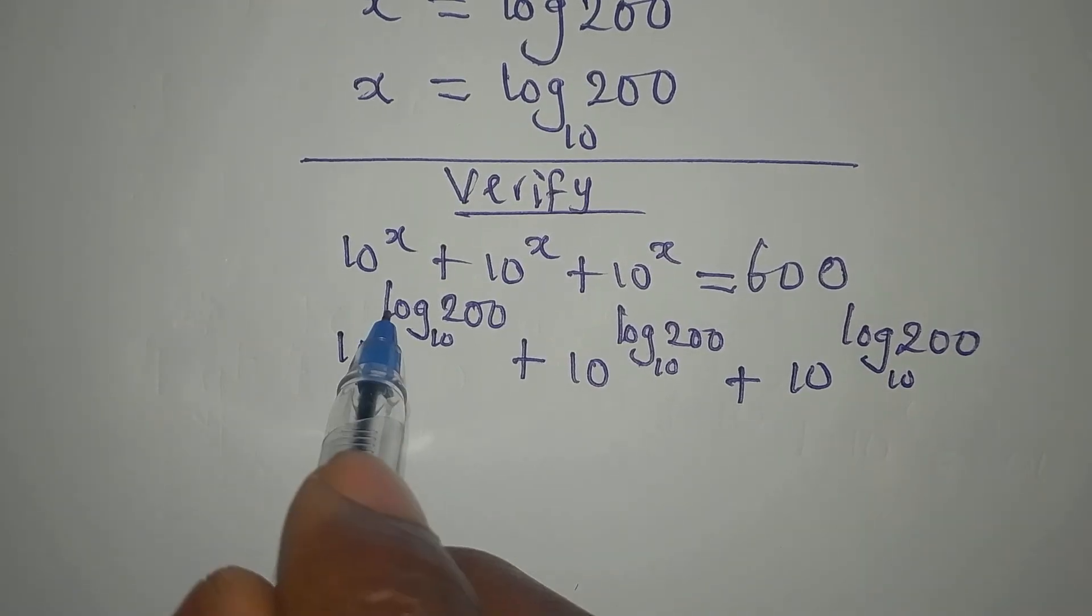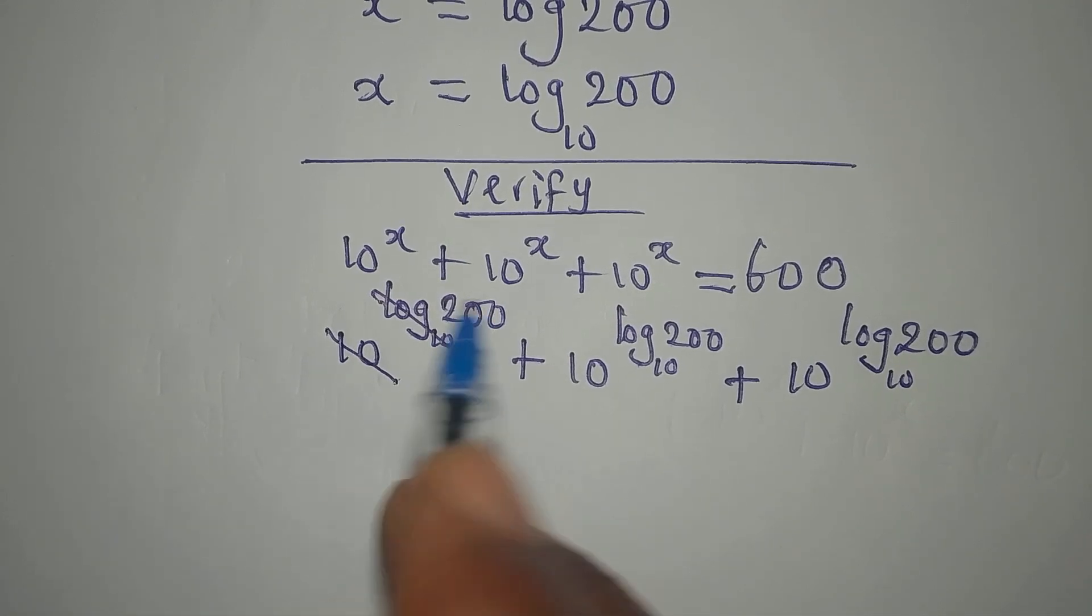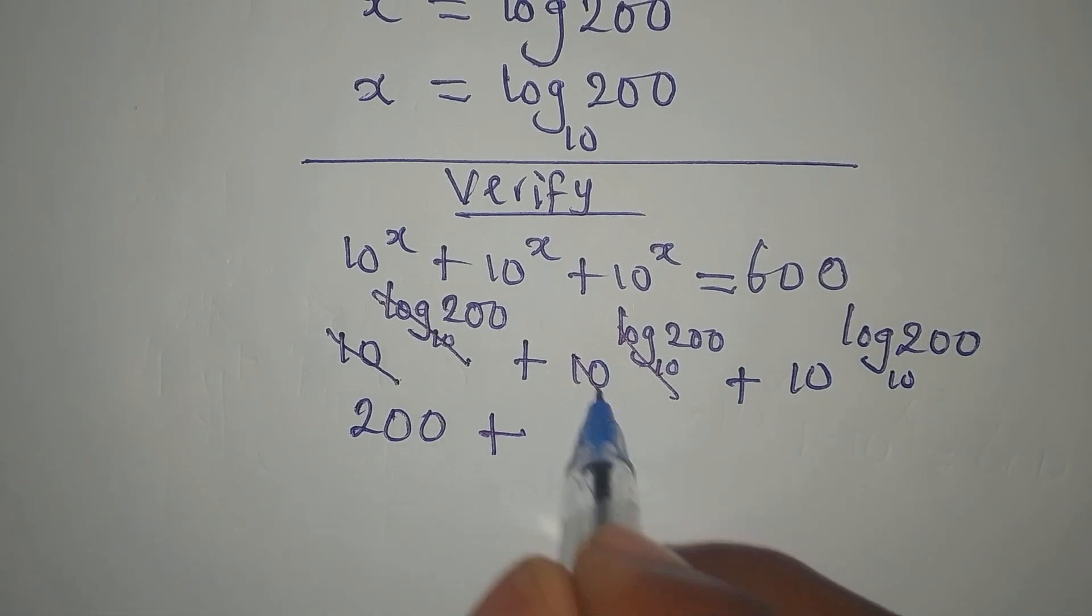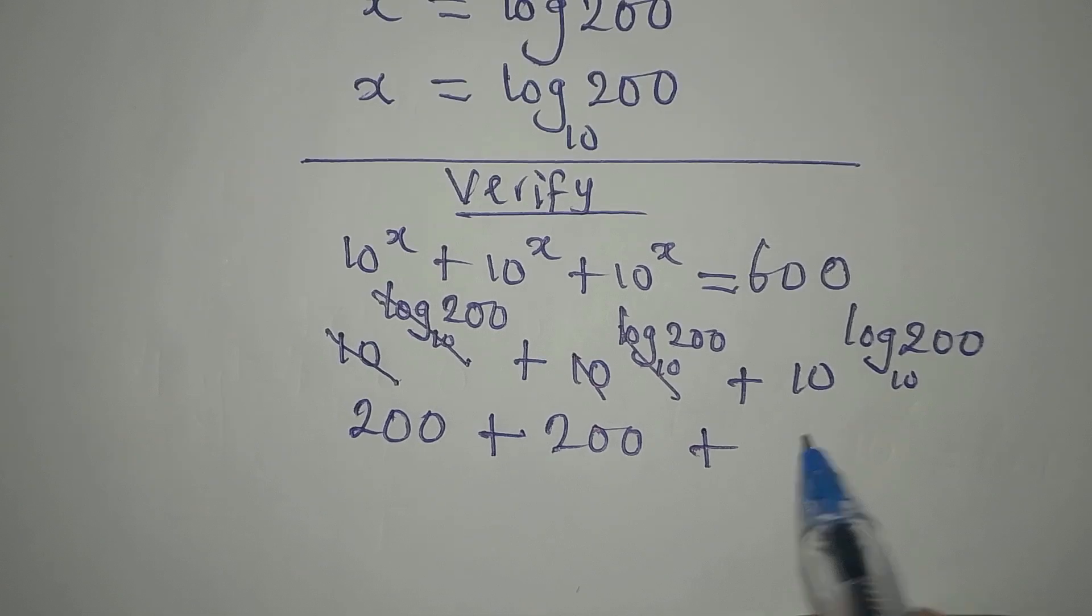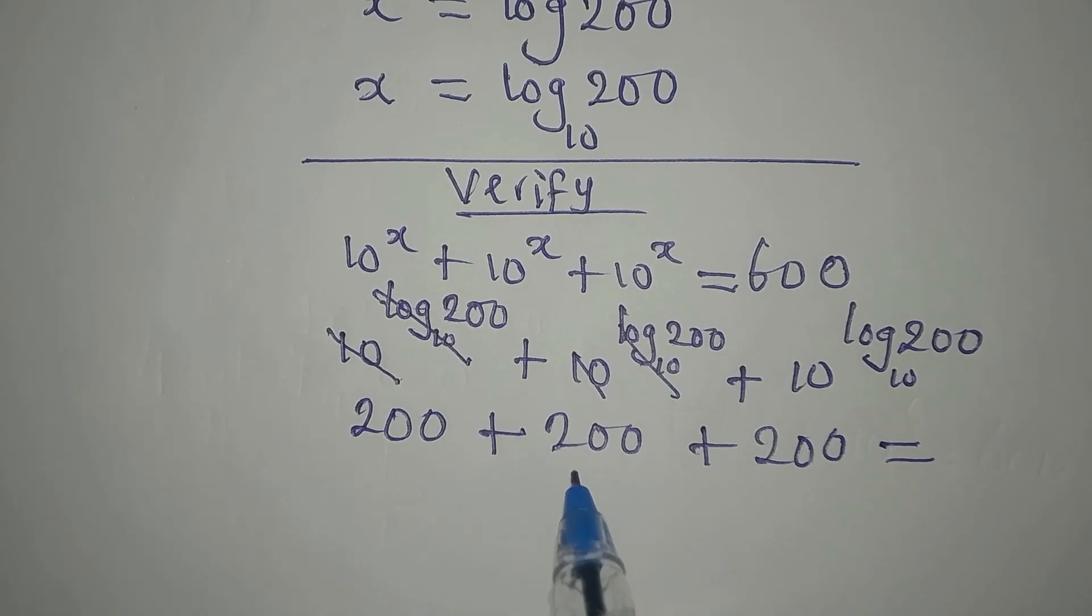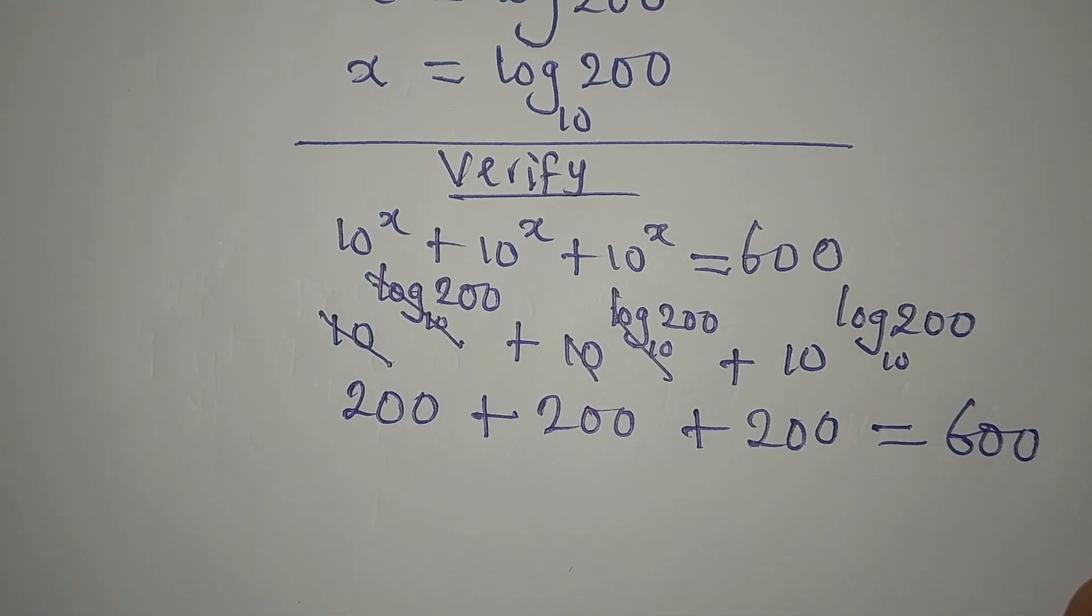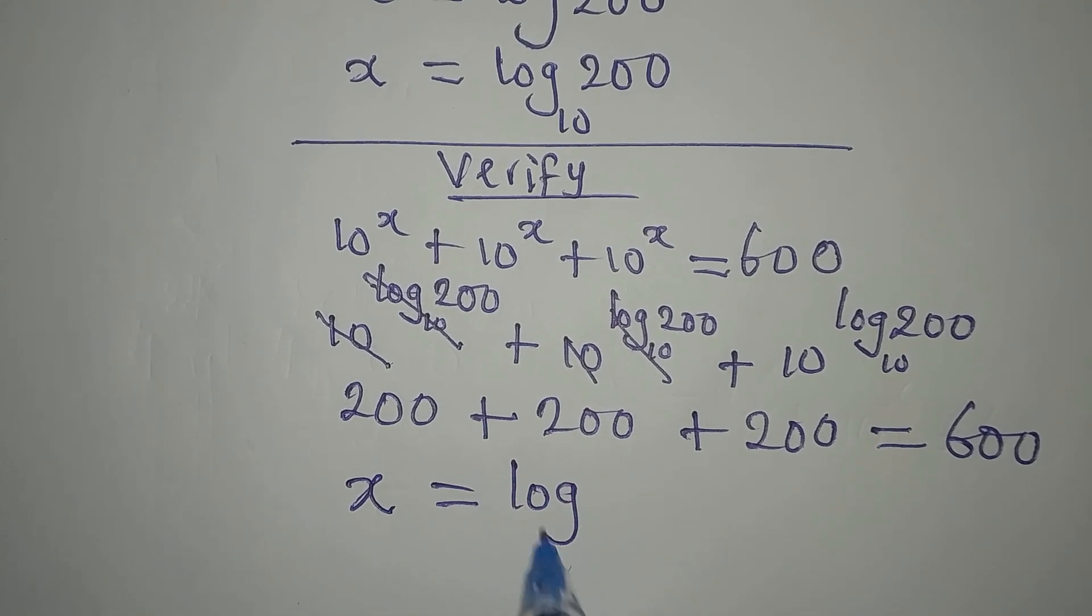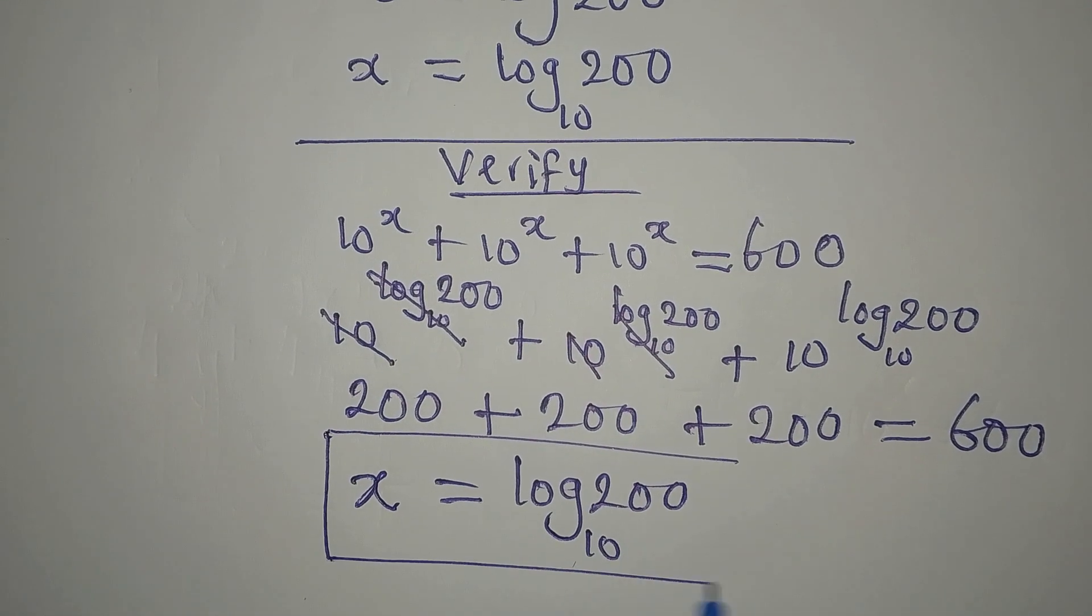Now since we have log 200 to base 10 and this 10, this and this can go, so we have 200, then plus the same 200, plus another 200. 200 plus 200 is 400 plus 200 is 600. So we are very sure that x is truly equal to log 200, and this is to base 10. Thank you for watching.